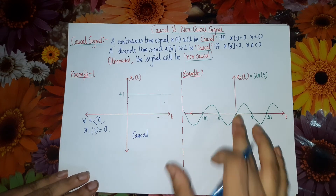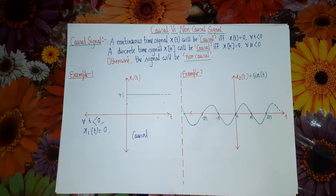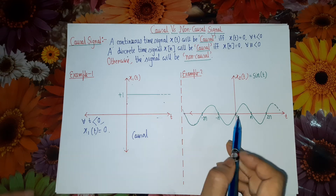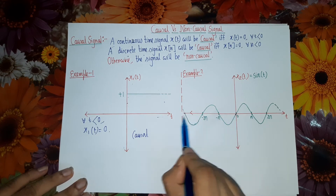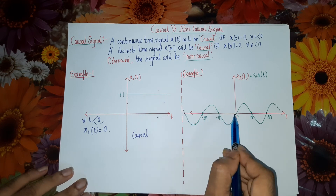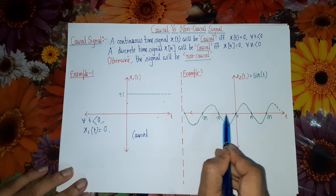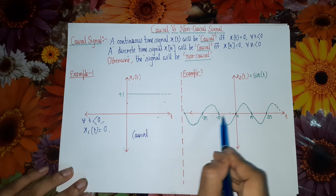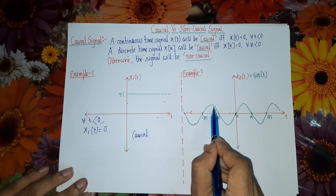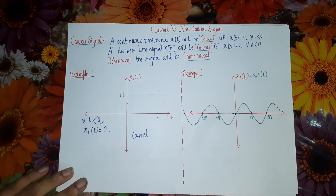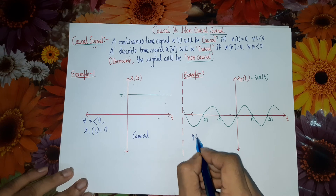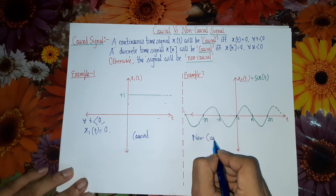Now look at this example. You observe from the waveform of x2(t) that it is a sinusoidal signal. Some portion of the waveform is lying in the negative time axis, from t equal to 0 towards the left. Since some portion of the waveform lies in the negative time axis, clearly this is a non-causal signal.